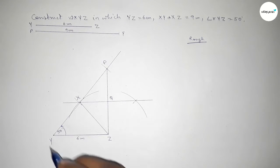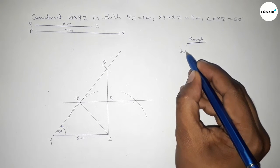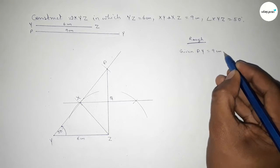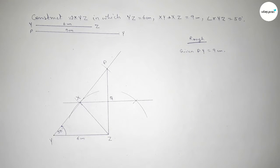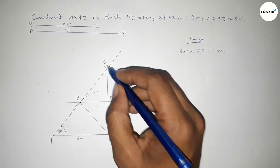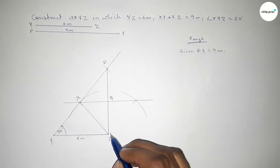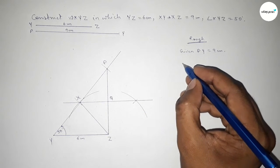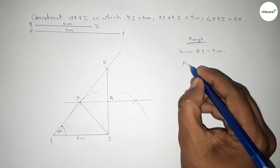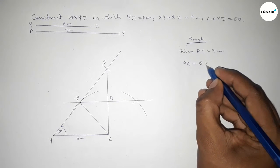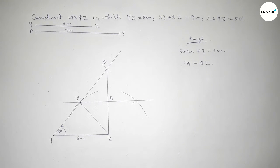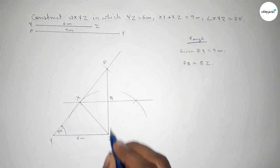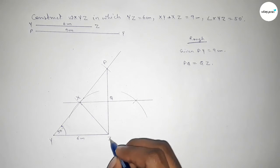So given PY equals 9 centimeter. The bisector of the line PZ bisects PZ into two equal parts, so the length PQ equals QZ. Now the line XQ is the common line of the triangles.